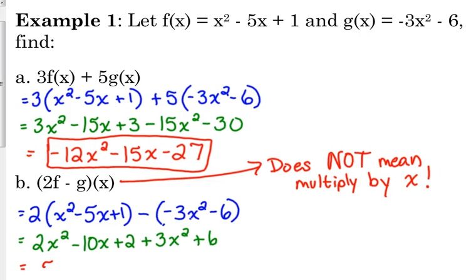And then, final step, we want to combine like terms. So we get 5x squared minus 10x plus 8. So that's our final answer.